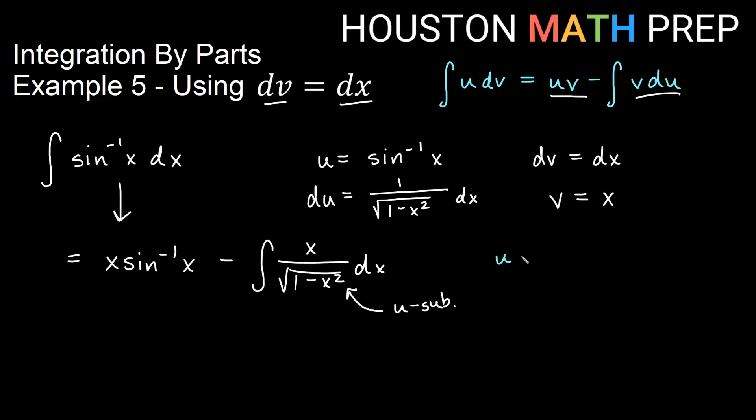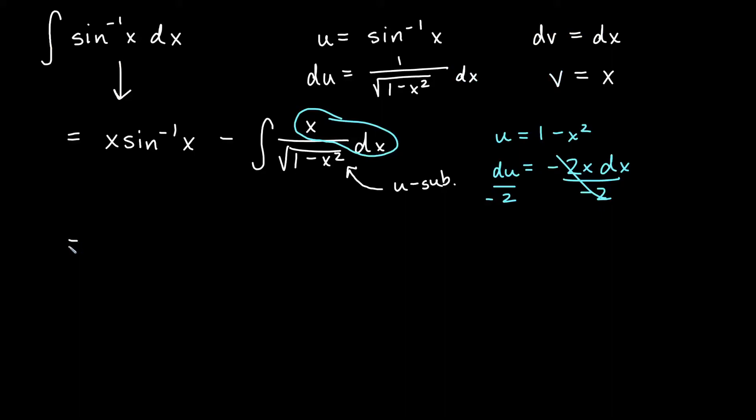So in this case, we go ahead and let u equal everything under the root 1 minus x squared. And then du is going to equal negative 2x dx. If you prefer, you can go ahead and say, well, what I really have here is x dx and solve directly for x dx. And so then you can see that x dx would be negative one half du. That's totally fine. If you don't need to do that, then don't worry about it.